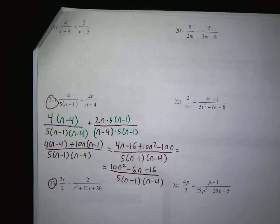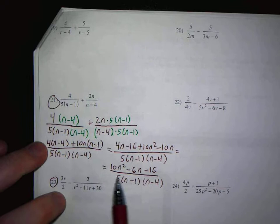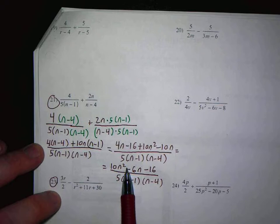Now you have a fraction, an algebraic fraction, and you should always reduce it. So in order to reduce this, I need to see what the factors are. So is there a GCF here? Yeah, 2, right?